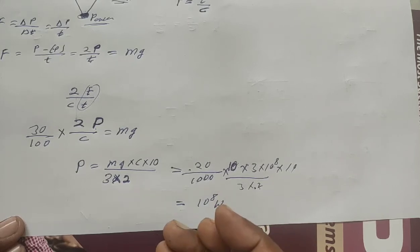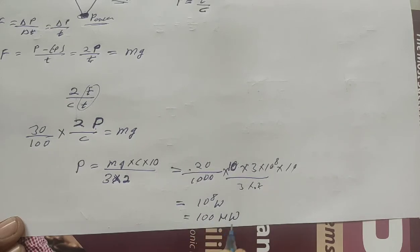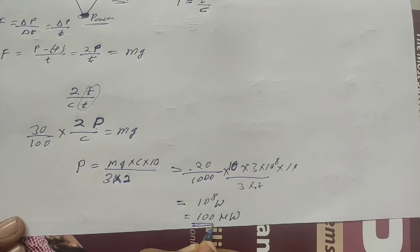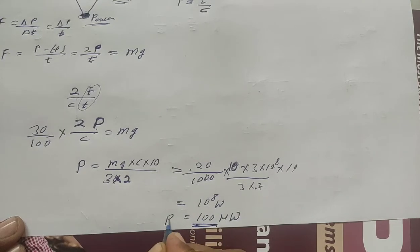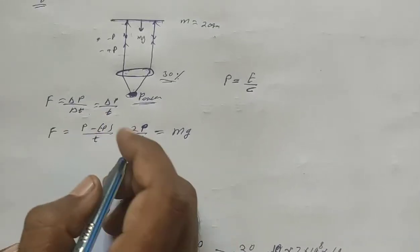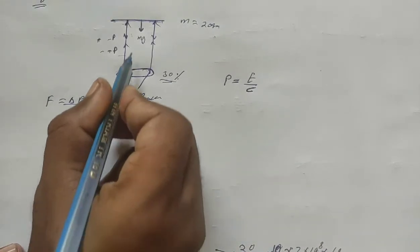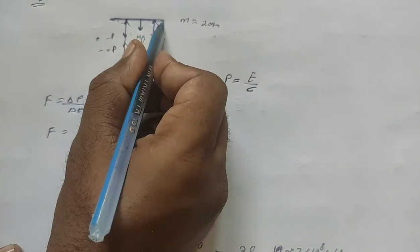Now converting: Mega means 10 to the power 6. So 10 to the power 8 watts equals 100 Megawatts. This is the required source power for the mirror to hold its position, given that 30% of the light passes through the lens.